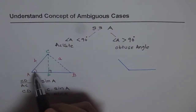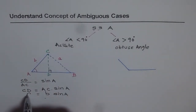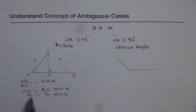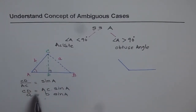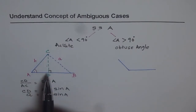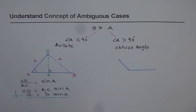CD is the side opposite to angle A, so we are calling that as A. AC is B for us, so CD equals B·sin(A). If we have a right triangle, this side CD should equal B·sin(A). In that case, we get just one triangle, and that triangle is the right triangle. So if they are equal, the solution is unique — just one distinct triangle.